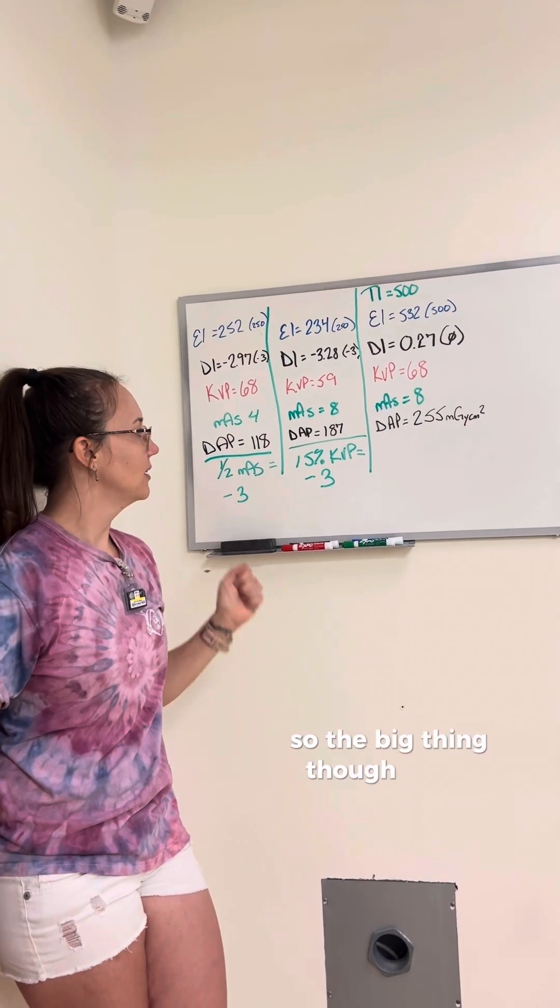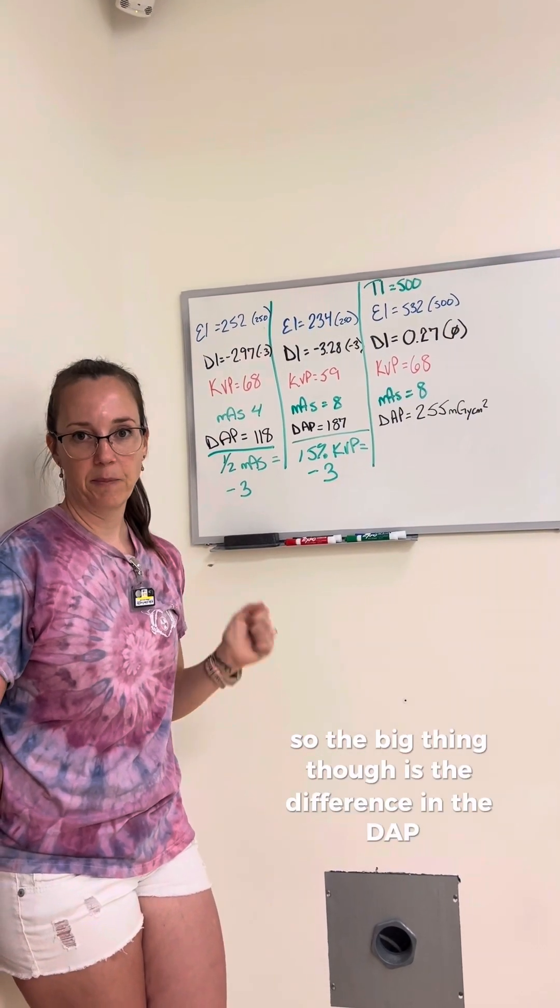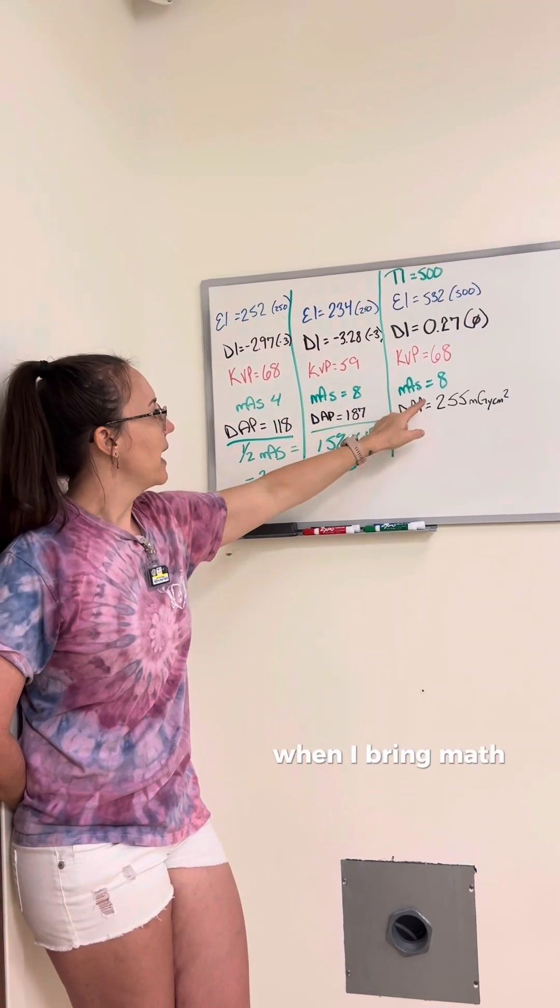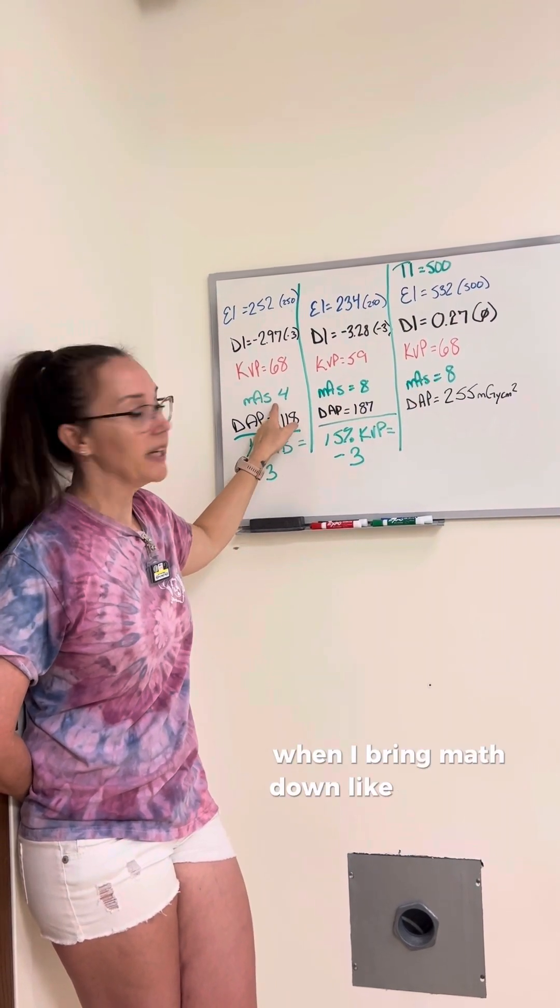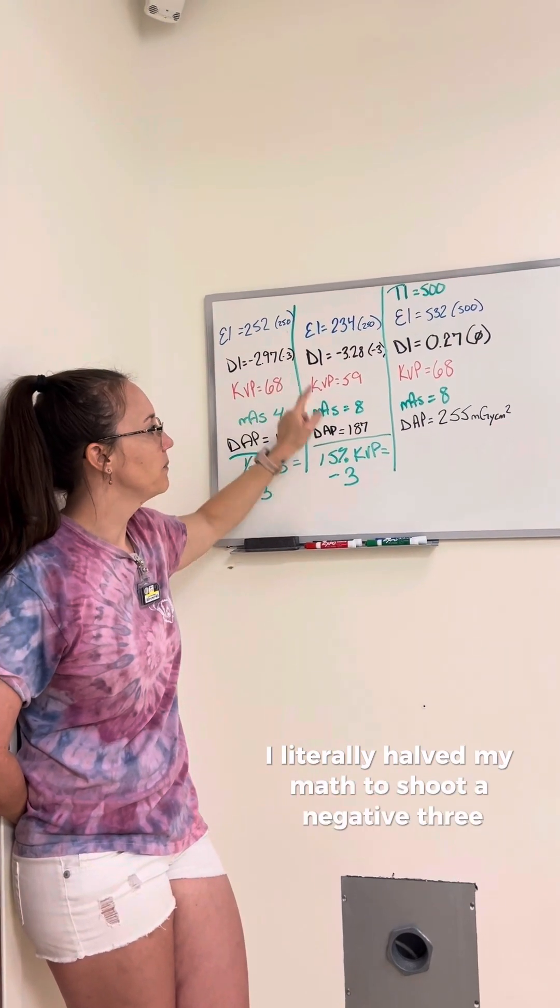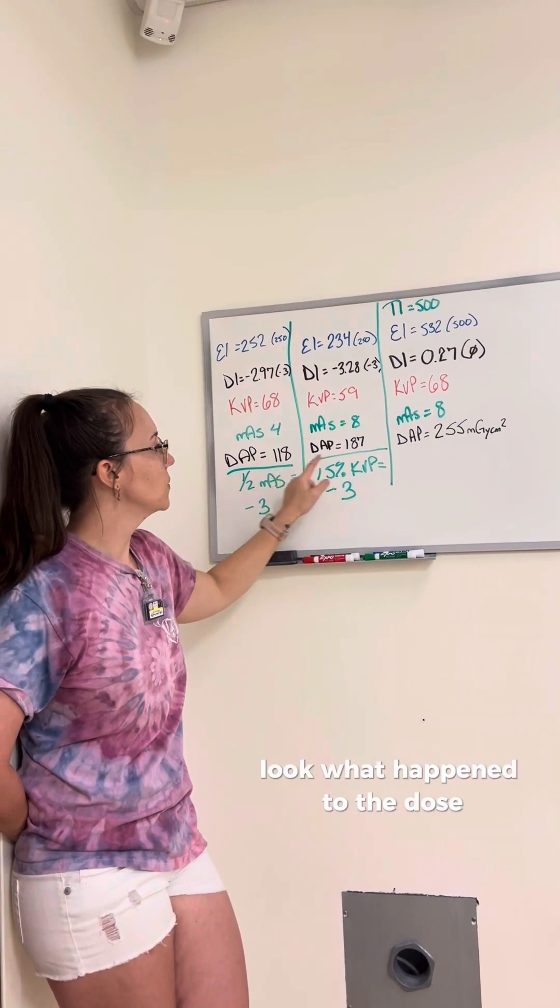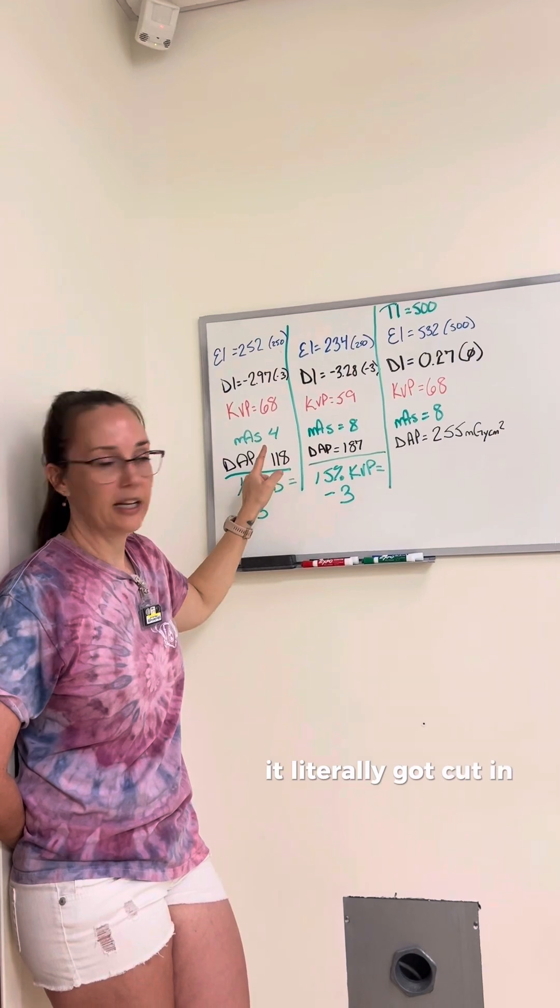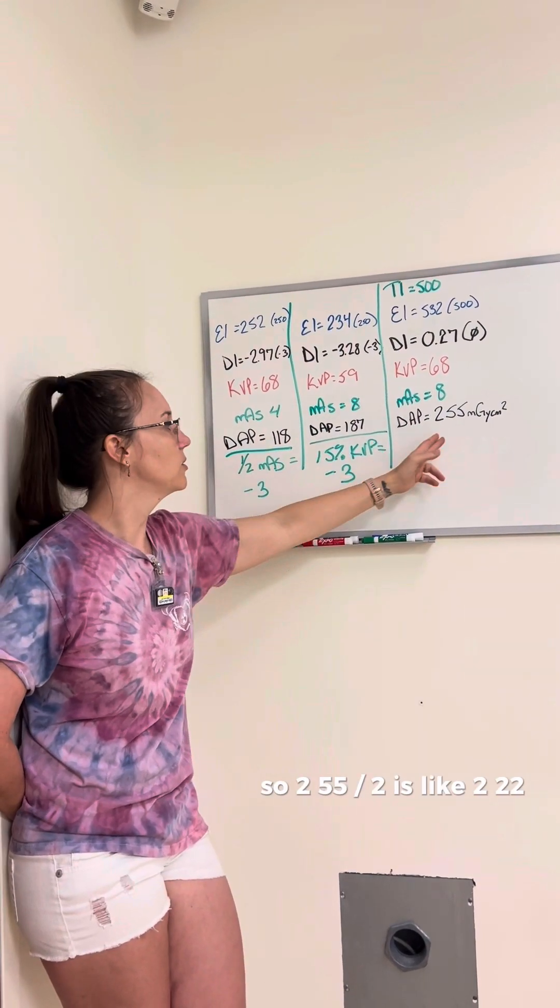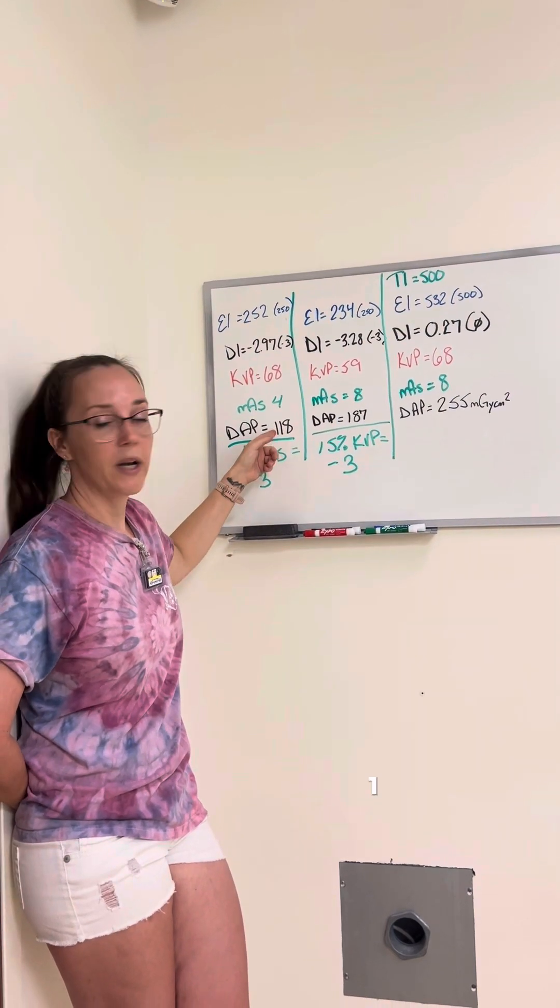So the big thing, though, is the difference in the DAP, the dose area product. When I bring mass down, like I did last week, I literally halved my mass to shoot a negative 3. Look what happened to the dose. It literally got cut in half. So 255 divided by 2 is like 127-ish, 118.